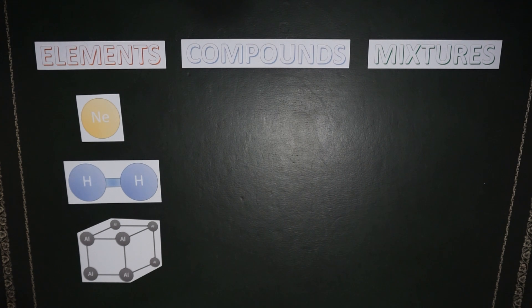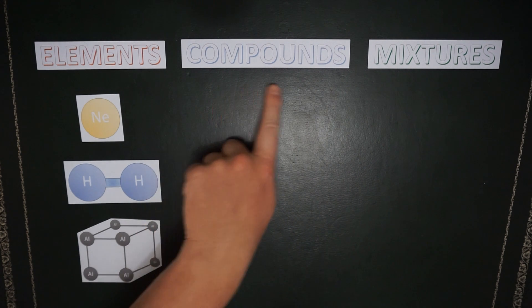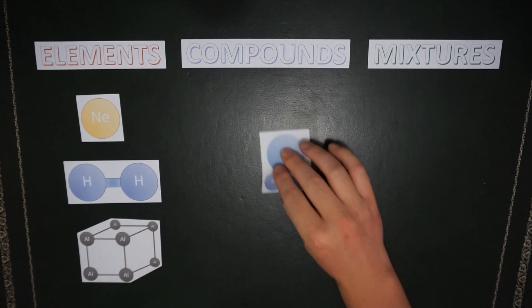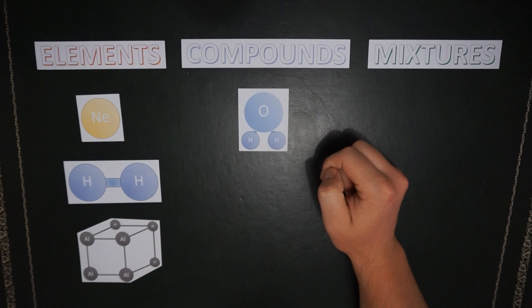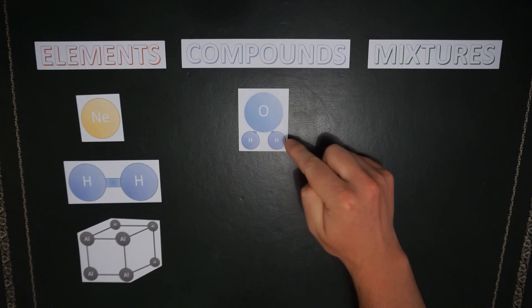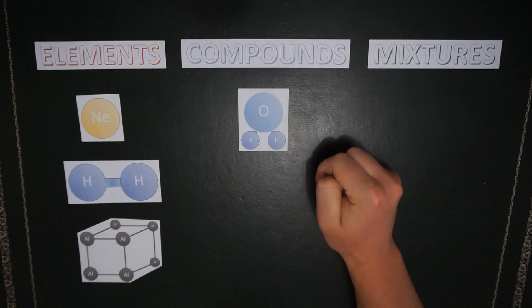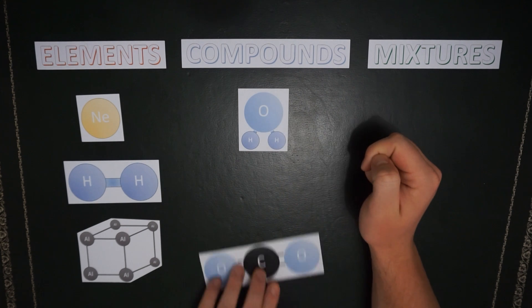When you have two or more elements bonding together, we get what's called a compound. These can be in the form of a molecule or a lattice. Water is an example of a molecular compound because it forms molecules and each molecule of water contains two hydrogen atoms for every one oxygen atom.